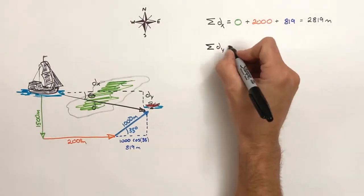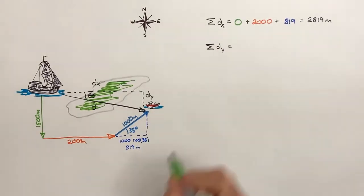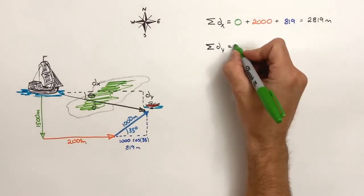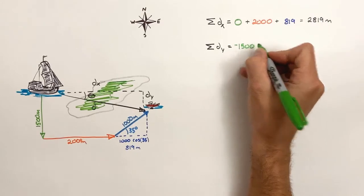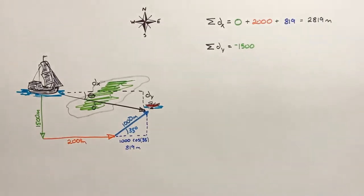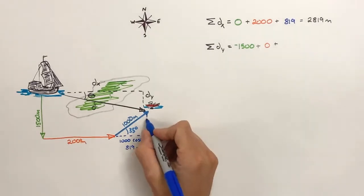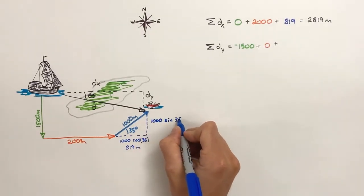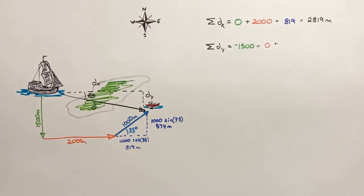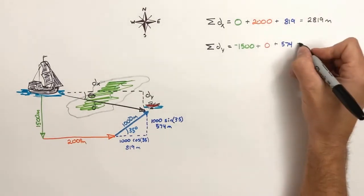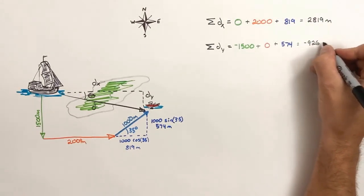Moving on to the y-axis: the first leg of the trip, the 1,500 meters, is due south — so that's 1,500 meters traveled in the y-axis, and because it's toward the south, we say it's negative. The next leg, 2,000 meters, is entirely in the x-axis, so it has no vertical component. The 1,000 meters is somewhat north; its vertical component is 1,000 sine 35, that's 574 meters. Adding together all three displacements in the y-axis, we find the total displacement is 926 meters south, or in the negative direction.